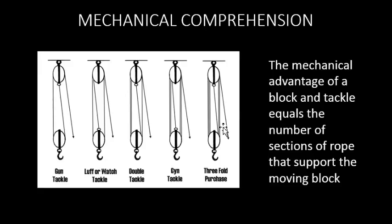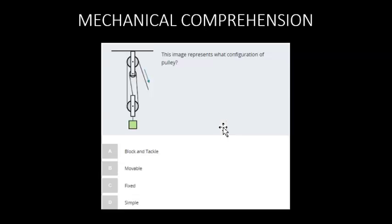Back to our question, the block and tackle system. As far as movable, fixed, and simple, I think they were just throwing that at us as what I would call a spoiler. This is a fixed pulley, this is a movable pulley, and this whole pulley configuration is what we would call a simple machine.